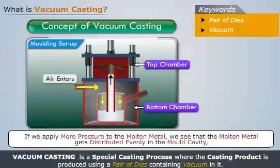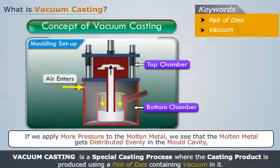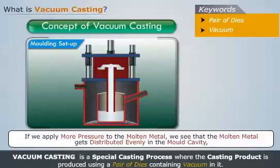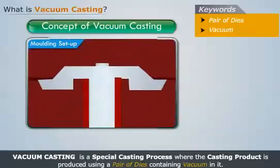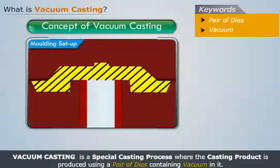Now if we apply more pressure to the molten metal, we see that the molten metal gets distributed evenly in the mold cavity, thus forming the casting product.